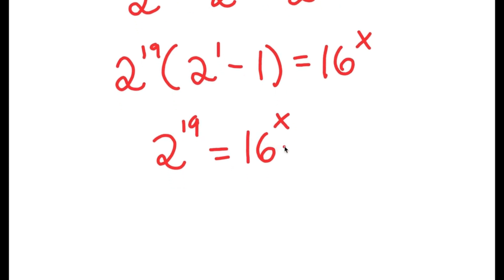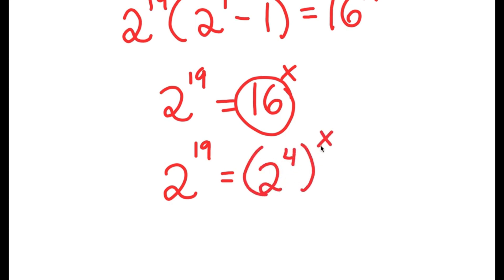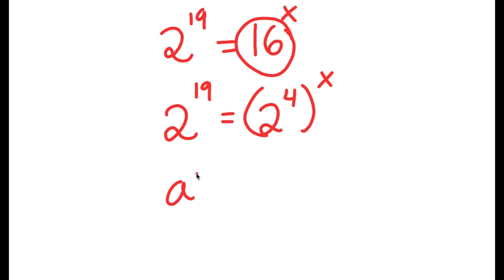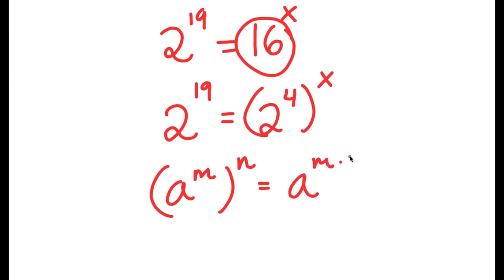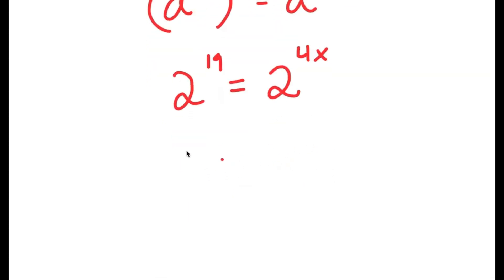Now, 16 is the same thing as 2 to the power of 4, so now I have 2 to the power of 19 is equal to 2 to the power of 4 to the power of x. And if I have something in the form a to the power of m to the power of n, this is equal to a to the power of m times n. So 2 to the power of 4 to the power of x equals 2 to the power of 4x.